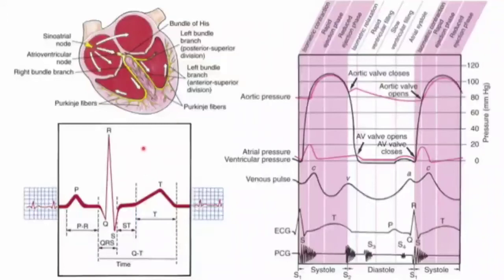An electrocardiogram is a graphic recording of electrical activity during the cardiac cycle. The ECG records electrical current generated by the movement of ions in and out of the myocardial cell membranes. It records two basic events: depolarization, which is the spread of a stimulus through the heart muscle, and repolarization, which is the return of the stimulated heart muscle to a resting state. The ECG records electrical activity as specific waves.